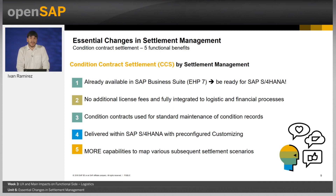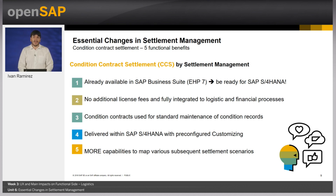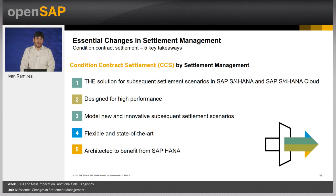These are five functional benefits of using condition contract settlement by settlement management. Settlement management is already available in SAP Business Suite Enhancement Package 7, so you can already start switching to CCS before your S/4HANA conversion. It has no additional license fee and is fully integrated to all logistic and financial processes. Condition contracts can be used for standard maintenance of condition records even if you don't use CCS settlement scenarios. It is delivered with SAP S/4HANA with pre-configured customizing, offers more capabilities to map various subsequent settlement scenarios, and is the solution for SAP S/4HANA and SAP S/4HANA Cloud — designed for high performance, flexible, state-of-the-art, and architected to benefit from SAP HANA.